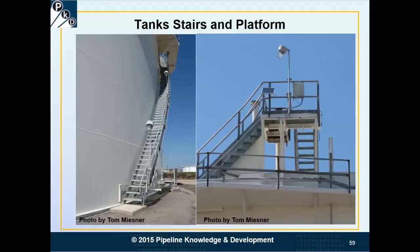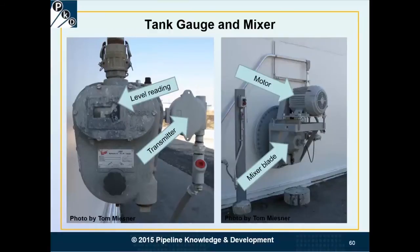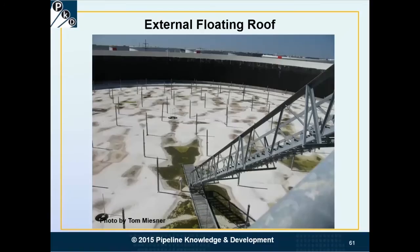Looking at more photos: you can see the tank stairs going up on the left, and on the right we have the platform. Behind the platform you can see the gauge tube and a ladder going down into the roof. On the side of the tank — this happens to be a crude oil tank — there's a mixer to keep everything mixed up. Sometimes product tanks have mixers as well to keep the product blended. On the left you can see a level reading at 20 feet and some inches, and a transmitter that sends that information to a control room. Looking down into the roof, you can see the steel roof floating on crude oil, with legs sticking up.